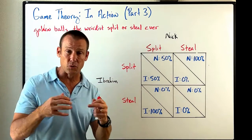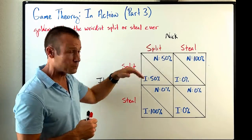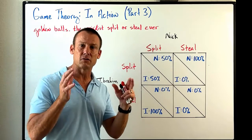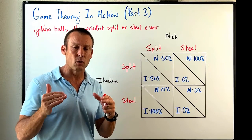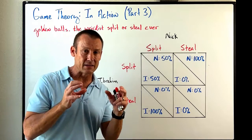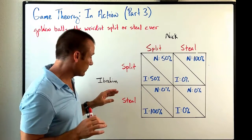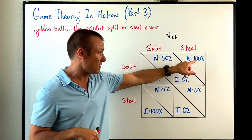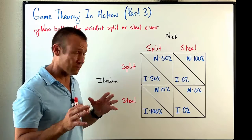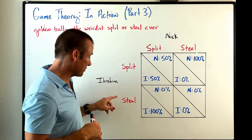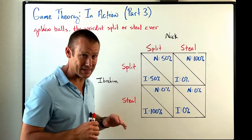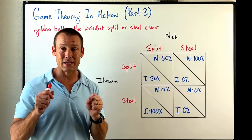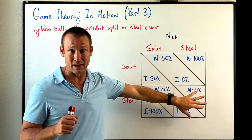And this was the payoff matrix. If they both played split, they would split the pot — the pot was 13,600 pounds — so each of them would get 6,800 pounds. If Ibrahim plays split and Nick plays steal, Ibrahim gets nothing and Nick gets 100% of the pot. And of course the opposite is true: if Nick plays split and Ibrahim plays steal, Ibrahim gets 100% and Nick gets nothing. If they both play steal, 0% and 0% — nobody gets anything.